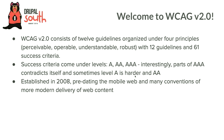WCAG 2.0 has 12 guidelines organised in four principles: perceivable, operable, understandable, and robust. And it has 61 success criteria within those. The success criteria can be classified as A, AA, and AAA. Generally if you're making something AAA, you're making it specifically for a particular audience because there are parts of AAA you can't really achieve with certain content. Sometimes though, level A — if you're looking at scale — can be harder than some of the hardest parts of AA.